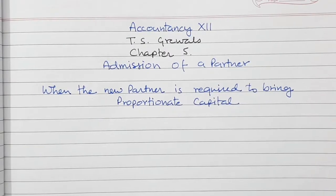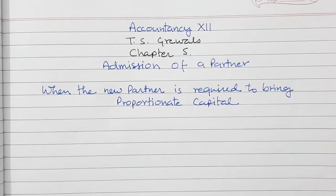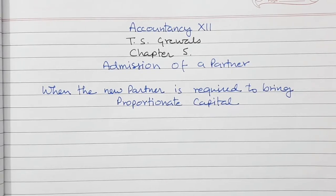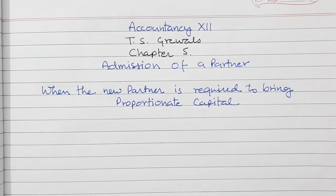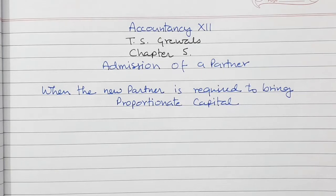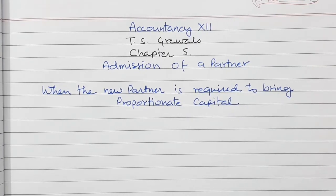Hello everyone. Welcome to the channel HD Orion. We are studying accounting for partnership firm for class 12th from the book T.S. Grewal. At present we are discussing chapter 5, admission of a partner. Now we are discussing when the new partner is required to bring proportionate capital.